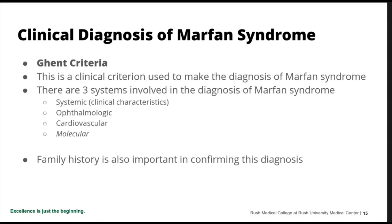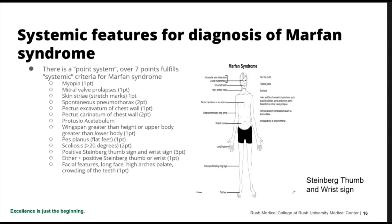Family history is also important in confirming the diagnosis, although 40% of patients do not have a family history because it's something new in them. Looking at the systemic or skeletal features, there is a seven-point system. Myopia — difficulty seeing in the distance — gets a point. Mitral valve prolapse gets a point. Skin stretch marks get a point. Spontaneous pneumothorax gets two points — you're walking down the street and have this horrible pain, and some patients with Marfan syndrome have blebs that cause separation between the lung and the chest wall, requiring a chest tube.